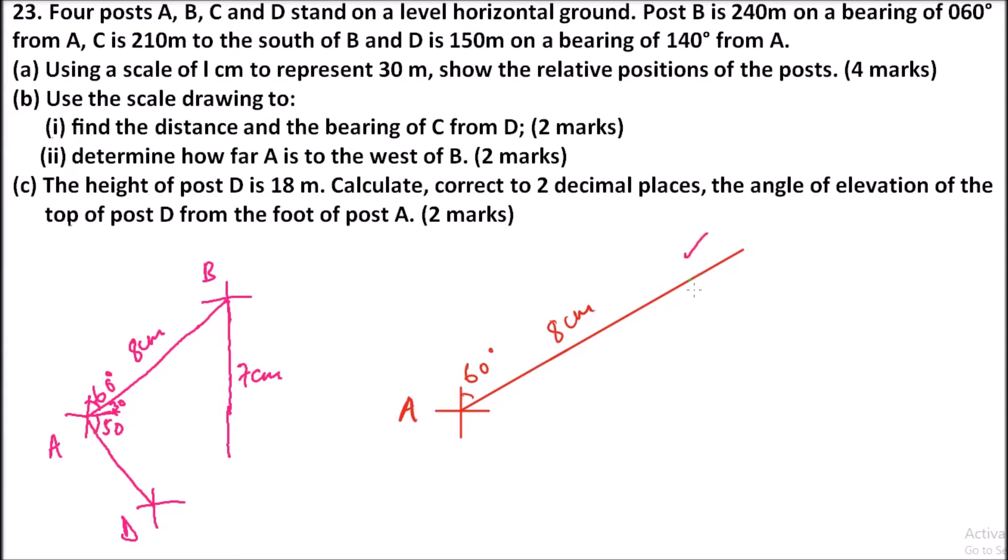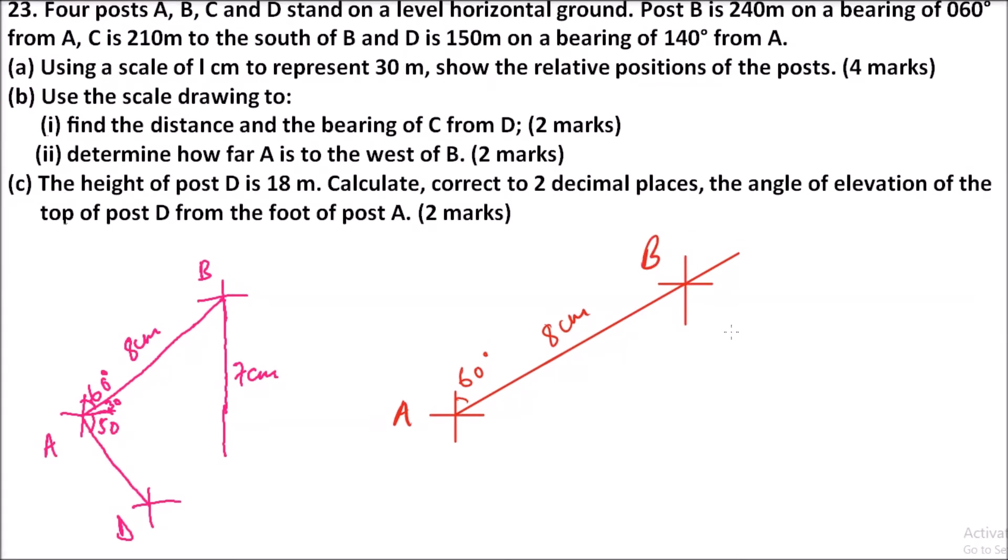I'm going to draw a compass here at point B so that we identify point C. So that is the compass at B. And then we are told that this is where we have our C, which is 210 kilometers south of B.